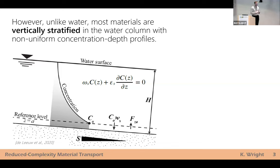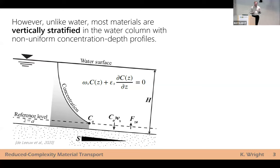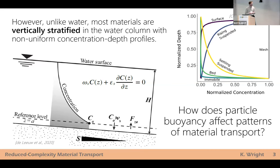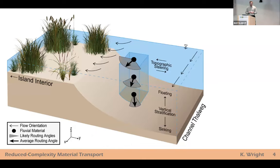Unlike water, most of the other things transporting into deltas that we're interested in have some positive or negative buoyancy in water and tend to concentrate either near the surface or near the bed. Due to this balance of turbulent mixing and settling, you end up with these vertically stratified concentration profiles — a non-uniform shape typical of sediment where most of the sediment is concentrated near the bed. This is true of other materials too: plastics or microplastics that might be buoyant or negatively buoyant could concentrate near the surface or somewhere in between.